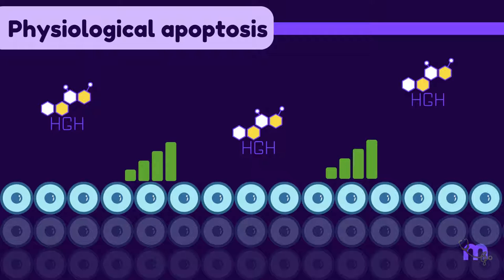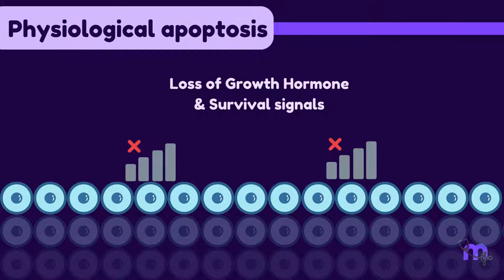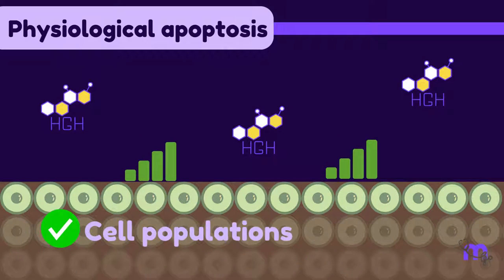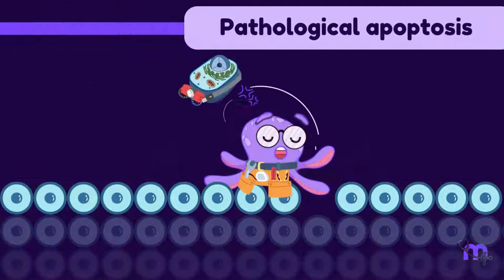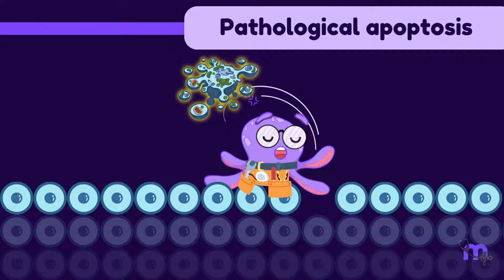This occurs due to a loss of growth hormones or survival signals and is important to maintain cell populations in tissues. Pathological apoptosis eliminates cells which are beyond repair.